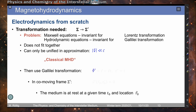The Galilei transformation states that the location vector r-prime is given by the rest frame vector r minus the velocity vector times the time, under the assumption that time is the same in the two frames. For the co-moving frame sigma-prime, the velocity at a reference location and reference time zero is zero — meaning the medium in the co-moving frame is at rest. This is actually the definition of the co-moving frame.